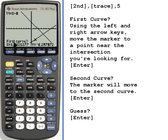At the bottom of the screen it says first curve. When the calculator says first curve it just means the first equation or the first line you're dealing with. We've got this little marker on this line, and I want to move the marker fairly close to the intersection that I want it to look for.